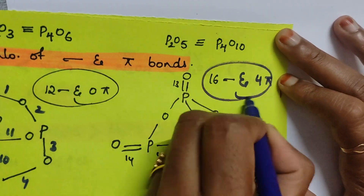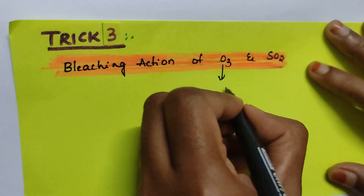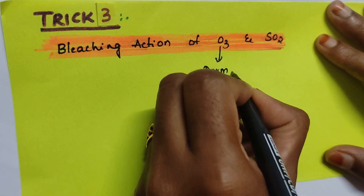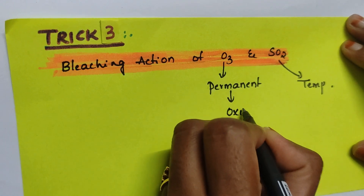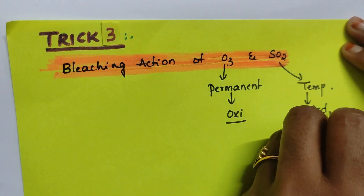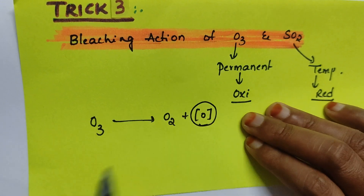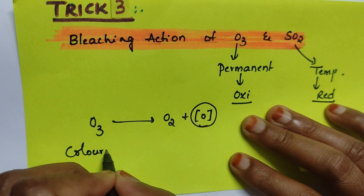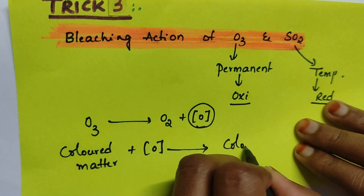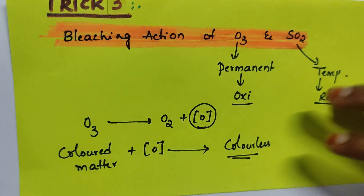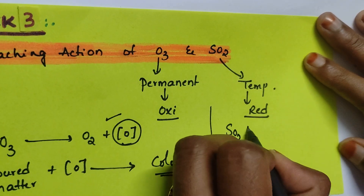Now let's see trick number three. In this I'm going to teach you the bleaching action of O3 and SO2. Bleaching action of ozone is permanent and SO2 is temporary. Ozone bleaching takes place through oxidation, and SO2 bleaching takes place through reduction. Ozone upon decomposition gives nascent oxygen, and this nascent oxygen oxidizes any colored matter to make it colorless — that's why it is permanent.